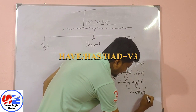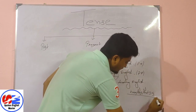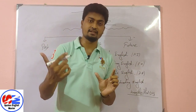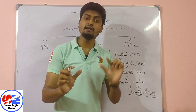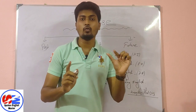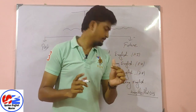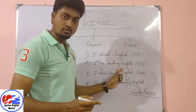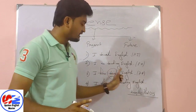One important rule: after 'have,' 'has,' or 'had,' if any verb follows, that verb should be in V3 form — that is, the past participle form. For example: go → went → gone; do → did → done; come → came → come; teach → taught → taught. So in 'I have taught English,' 'taught' is the V3 form of 'teach.'